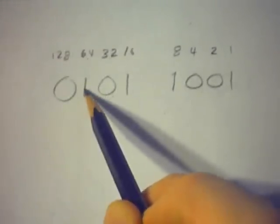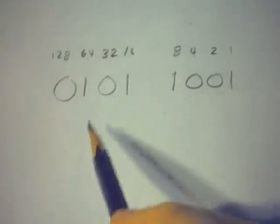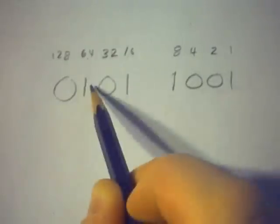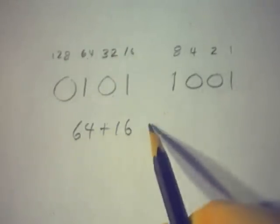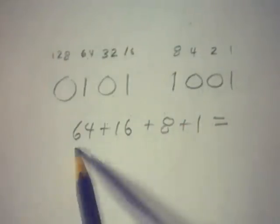If it has a 1, then we're going to include that number in our addition of numbers to get the decimal equivalent. So, we're going to take 64 plus 16 plus 8 plus 1 gives us our decimal equivalent.